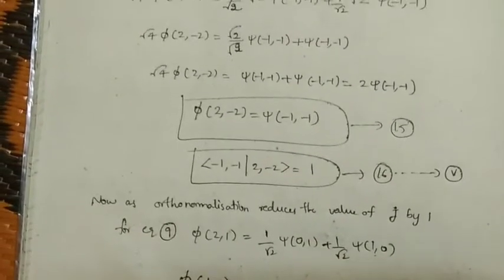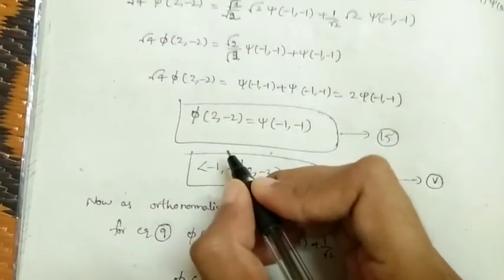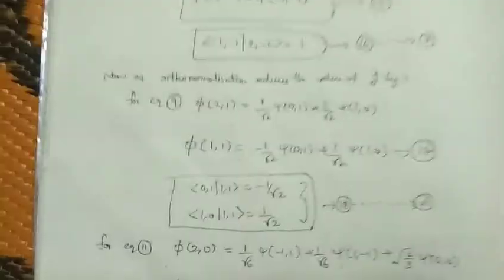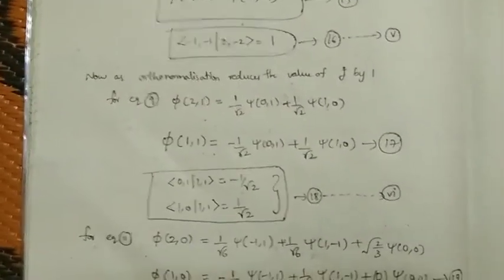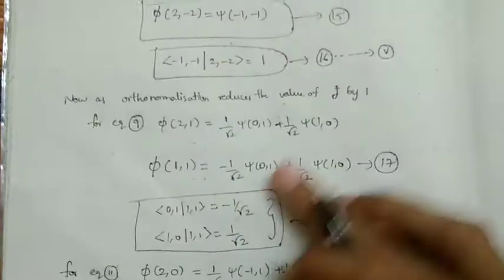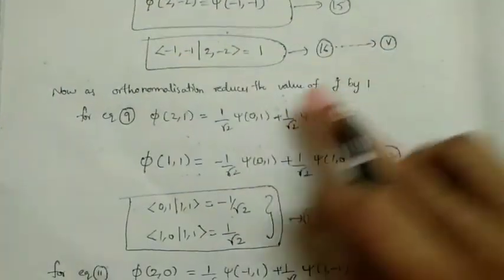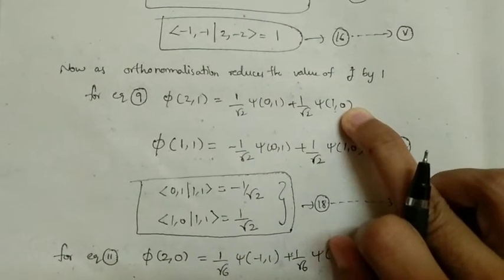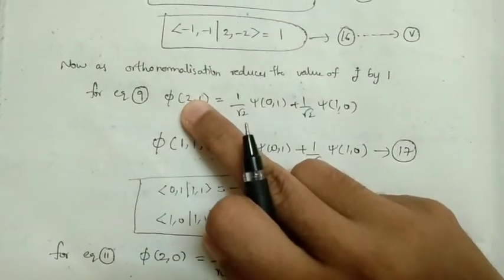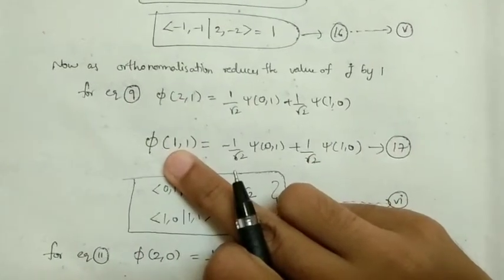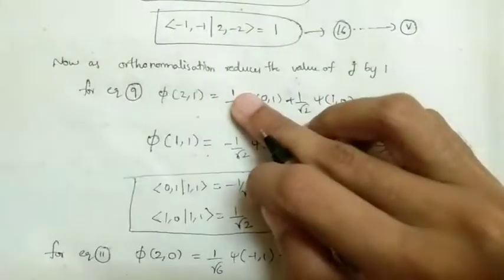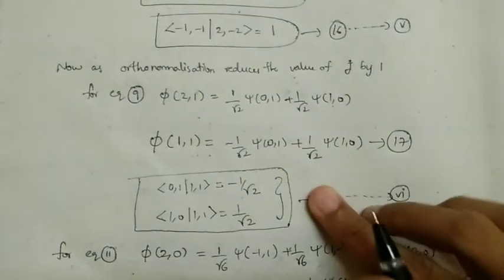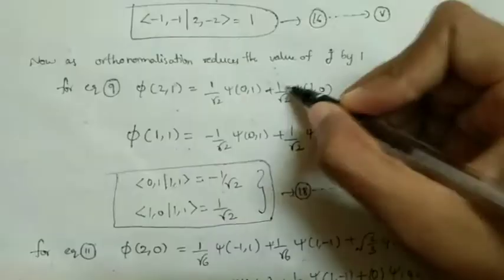We cannot apply j-minus further since it would reduce m=-2 to -3, which is not allowed for j=2. So next we use the orthonormalization condition: the integral of xi_i times xi_j equals 0 if i≠j. This condition also reduces the j value by 1. Using equation 9 and its orthonormal eigenfunction, the product gives terms like 1/√2 minus 1/√2 which sum to zero — satisfying orthonormality — and from this we arrive at another set of Clebsch-Gordan coefficients.